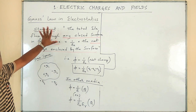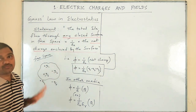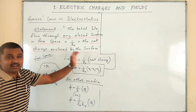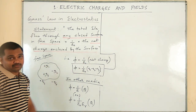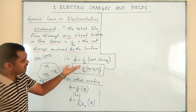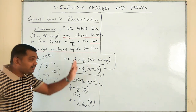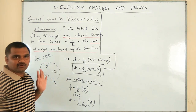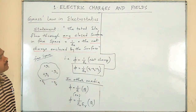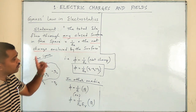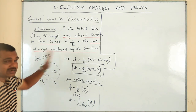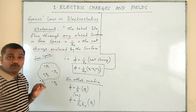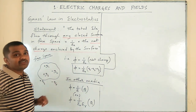The statement of Gauss law says that the total electrical flux through any closed surface in free space is equal to 1 over epsilon-naught times the net charge or total charge enclosed by the closed surface. When we compare this Gauss law with Coulomb's law, Coulomb's law was applicable only for static charges, whereas we can apply this Gauss law even for moving charges. This Gauss law is applicable for both static charges as well as moving charges.